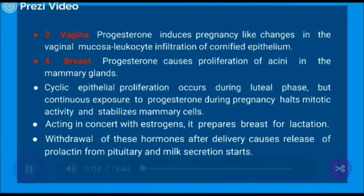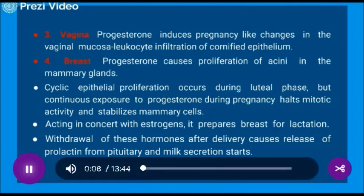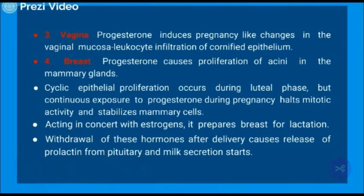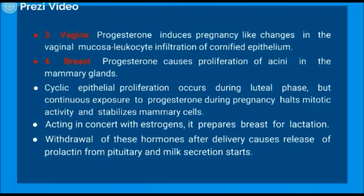Effect on vagina: Progesterone induces pregnancy-like changes in the vaginal mucosa, including leukocyte infiltration of the epithelium. Effect on breast: Progesterone causes proliferation of acini in the mammary gland. Cyclic epithelial proliferation occurs during the luteal phase, but continuous exposure to progesterone during pregnancy halts mitotic activity and stabilizes mammary cells. Acting in concert with estrogens, it prepares the breast for lactation. Withdrawal of these hormones after delivery causes release of prolactin from the pituitary and milk secretion starts. So from implantation up to the end of pregnancy, delivery, and milk secretion, the role of progesterone is there.